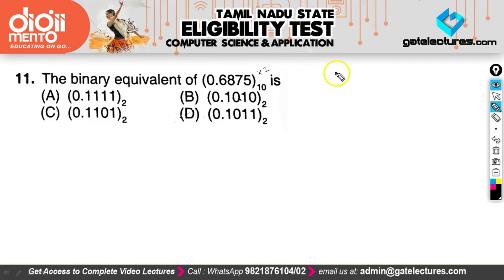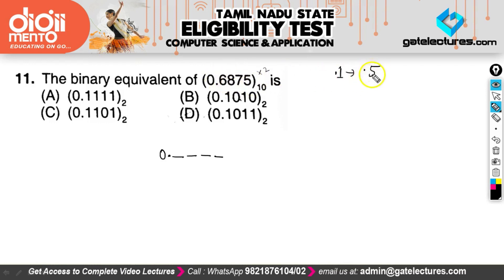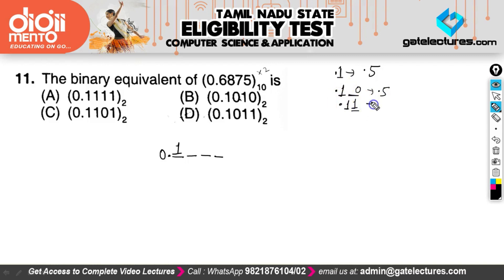Consider converting 0.6875 to binary with 4 places: 0.1, 0.2, 0.3, 0.4. Since 0.1 in binary is 0.5, and 0.6875 is greater than 0.5, the first digit is 1. For the second digit, 0.10 is 0.5 and 0.11 is 0.75. Since 0.6875 is less than 0.75, we discard 0.11 and take 0.10 — so the second digit is 0.